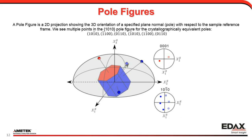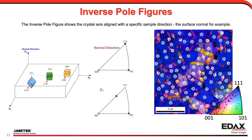There's another representation called the inverse pole figure, which shows the crystal axis aligned with a specific sample direction — for example, the surface normal. In the schematic, the blue crystal has a 111 plane parallel to the normal direction, the green crystal has a 110 pole parallel to the normal direction, and the yellow is the cube orientation, 001, shown in the standard stereographic unit triangle for cubic symmetry. An inverse pole figure isn't just for normal directions — we can look along any sample axis.